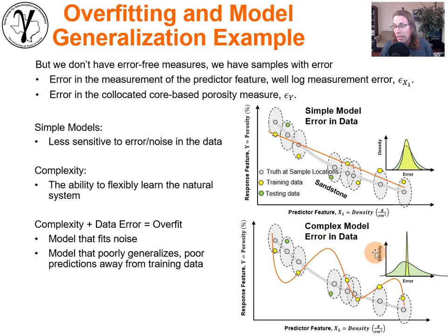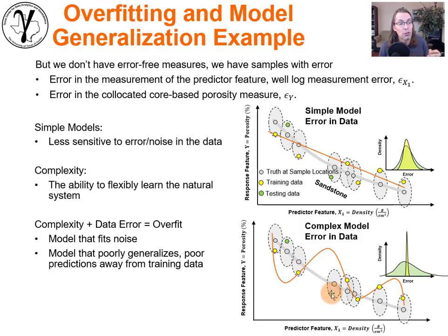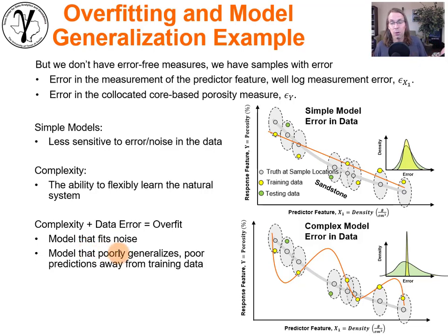Look at our complicated model: it is perfectly accurate at the training data, passing right through all of those data points no matter how much error we put on them — it's fitting that error. But look at what happens with the testing data. The distribution of error in testing is very high. The model has begun to, with flexibility, better fit noise. The model is now poor at generalization away from the training data.